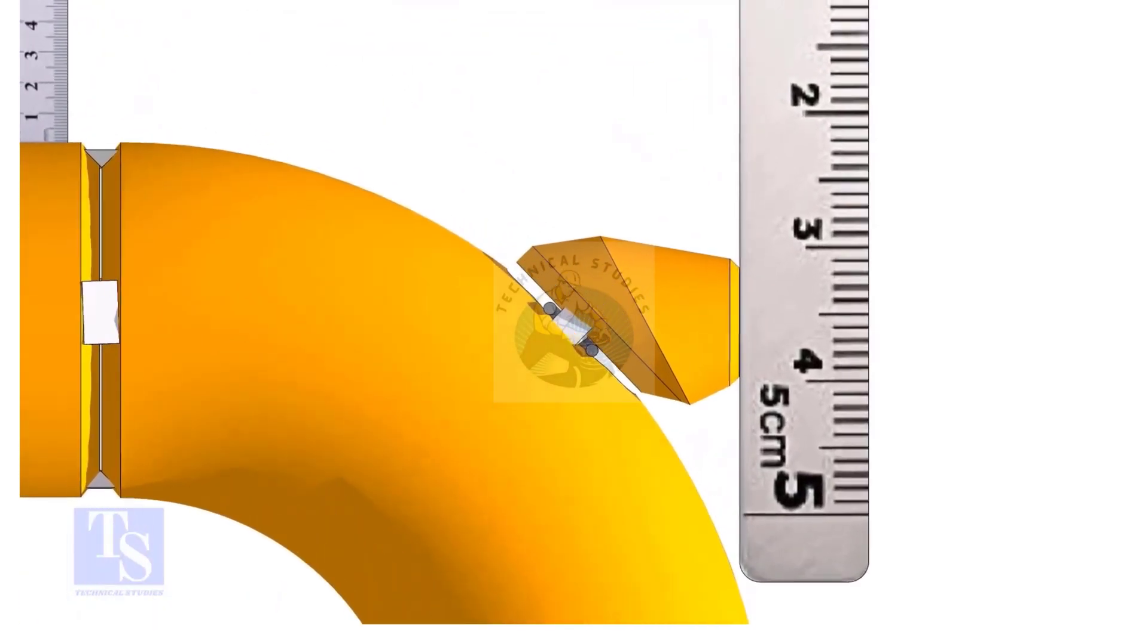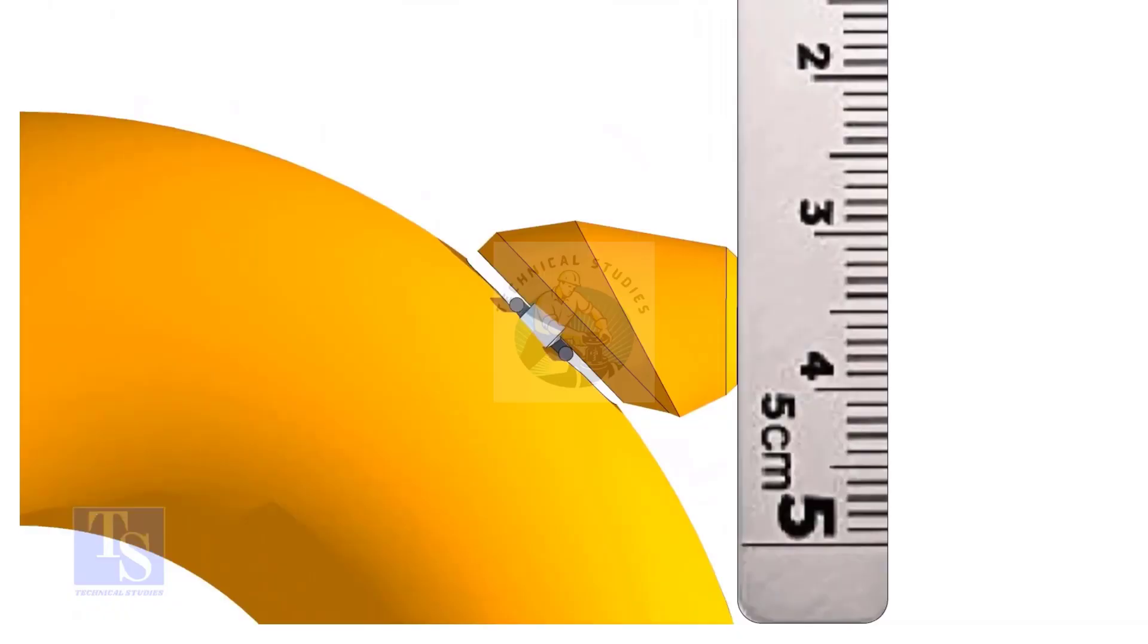Maintain the vertical squareness and tack weld on the top and bottom side of the elbowlet.